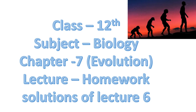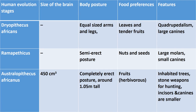Good morning students, this is 12th class biology, chapter 7 evolution, and today we will discuss the homework solutions of lecture number 6. Question number 4 of NCERT was given as homework and the question is: trace the various components of human evolution. These are the different stages of human evolution and the different features of these stages have been compared here.